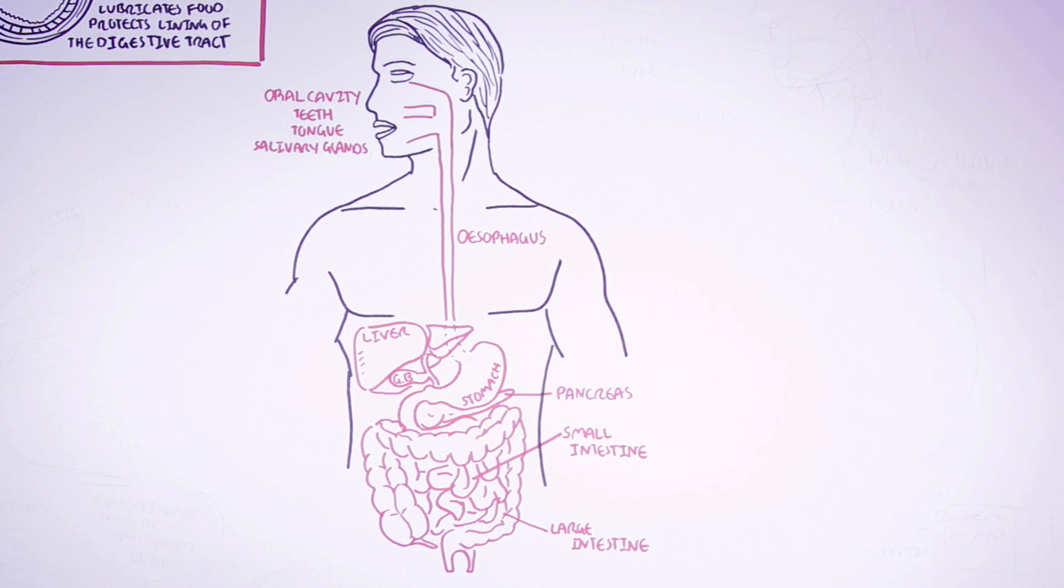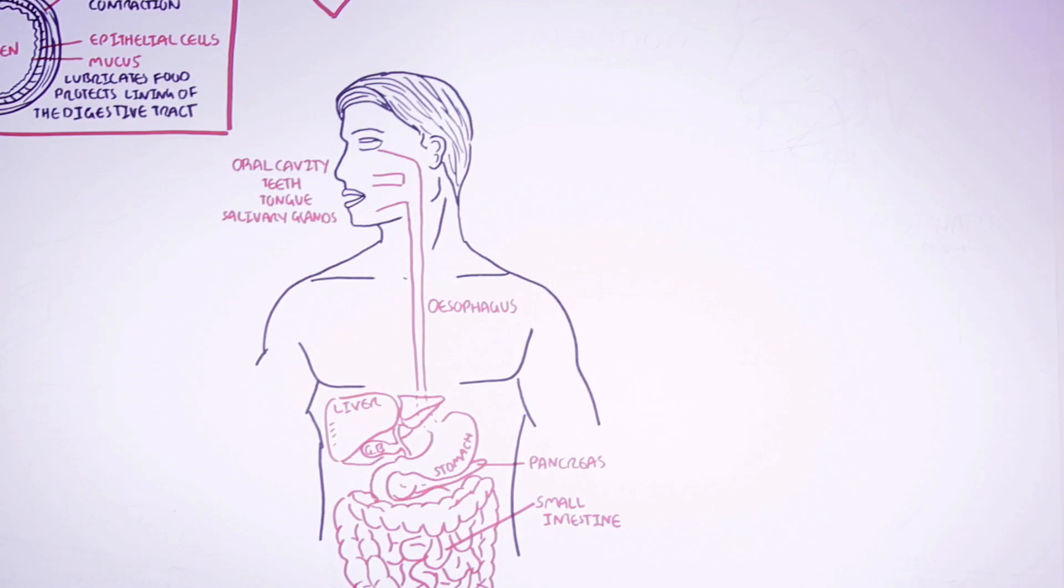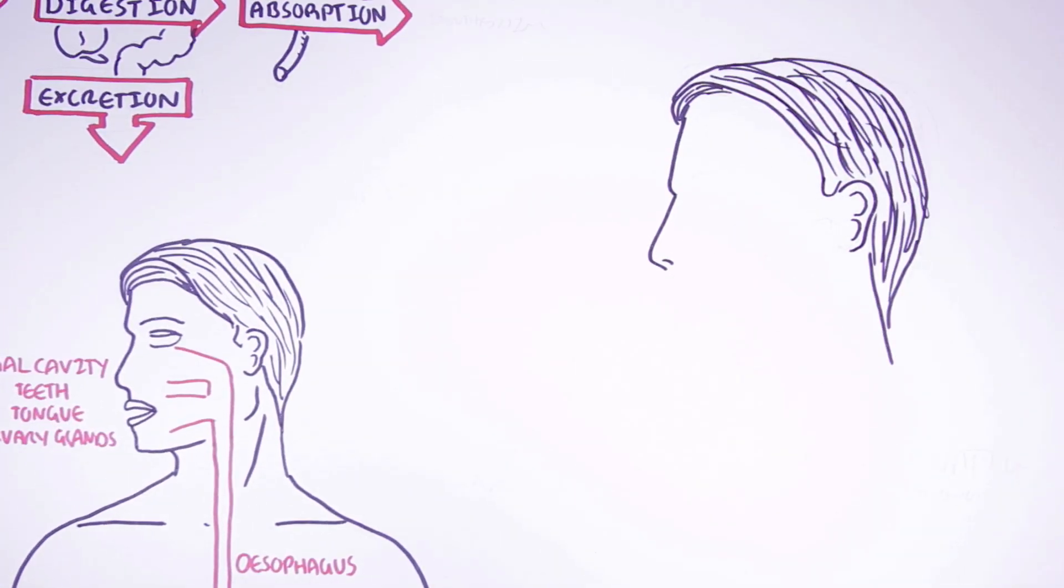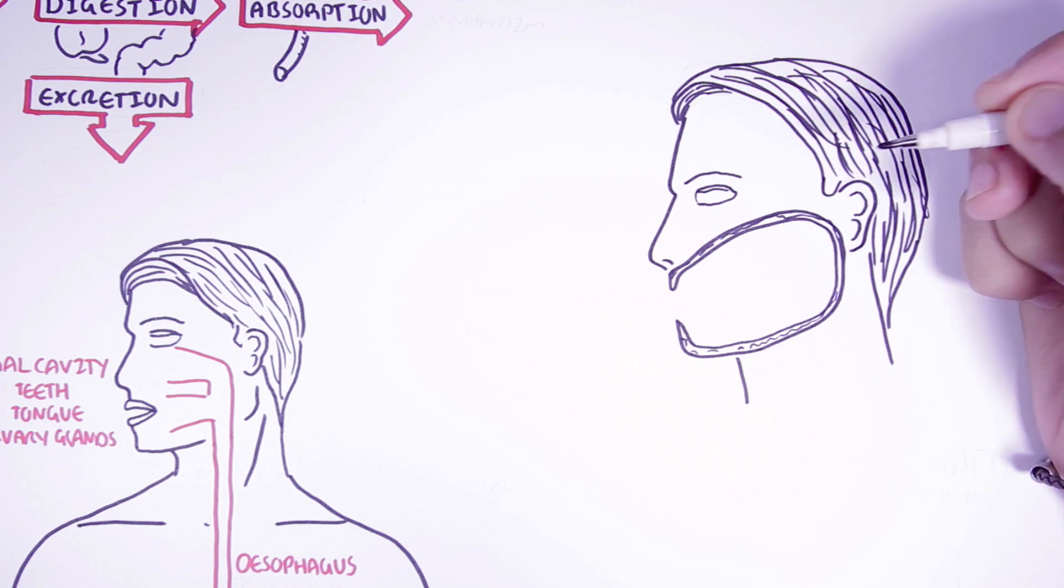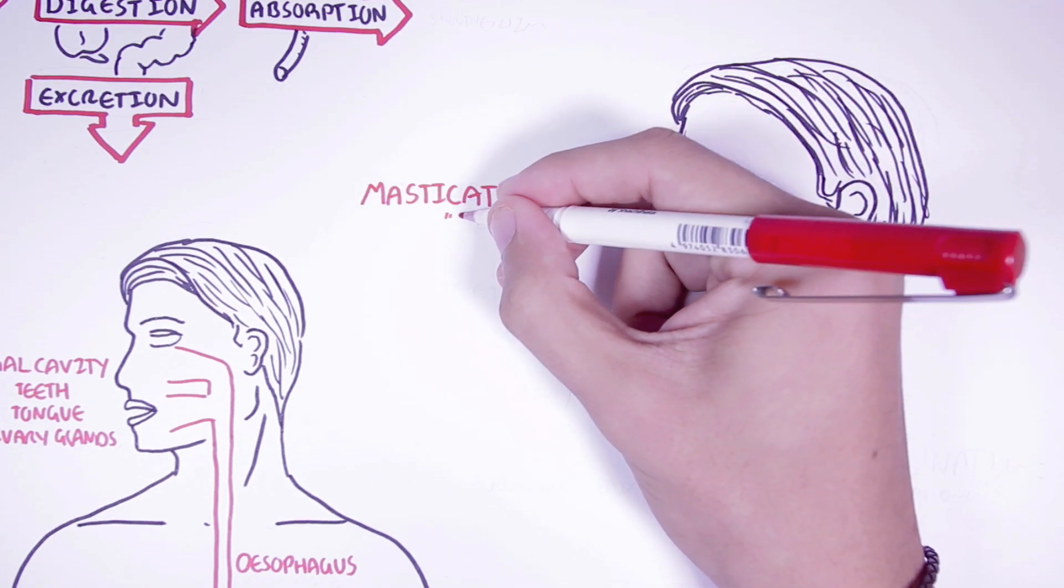Now that we have a better feel for the digestive system, let us look at each of the organs of the digestive system and what they do in relation to foods being consumed. So food enters the oral cavity. The process called mastication occurs, which is essentially chewing.